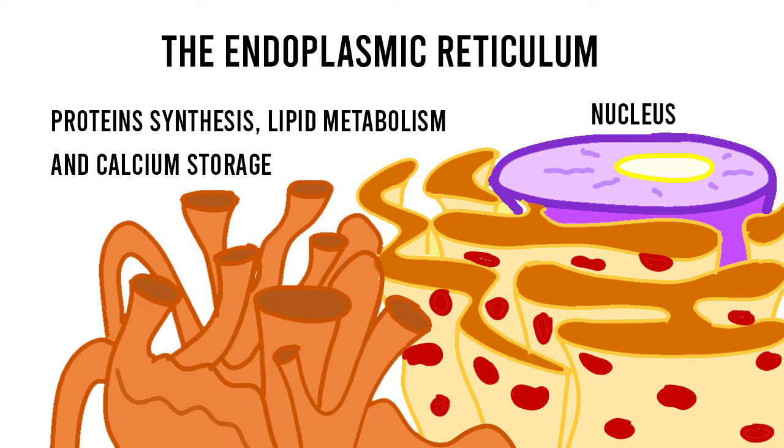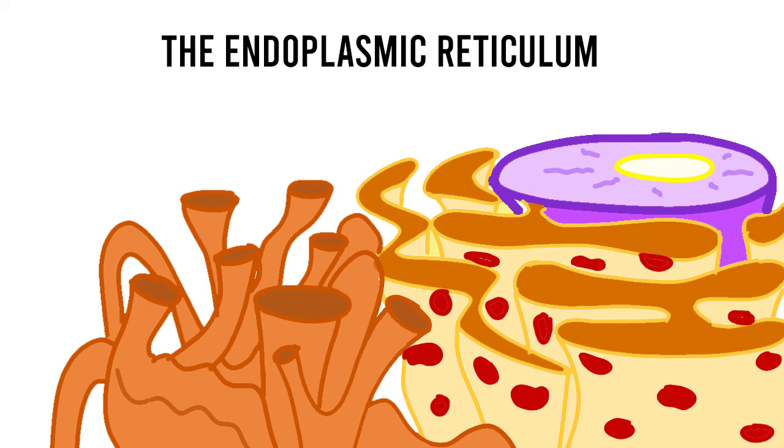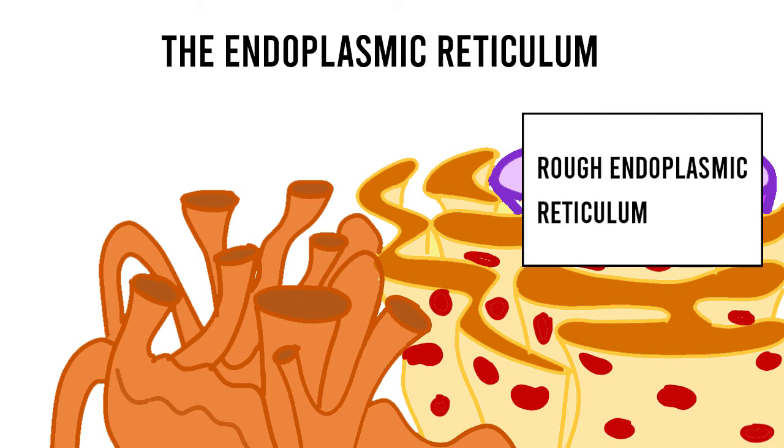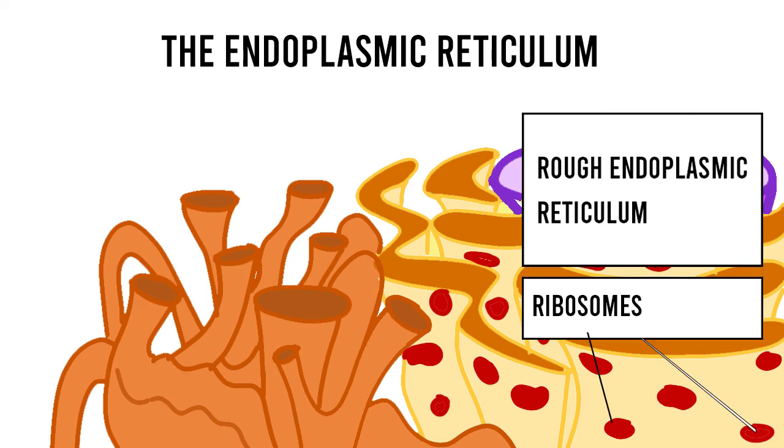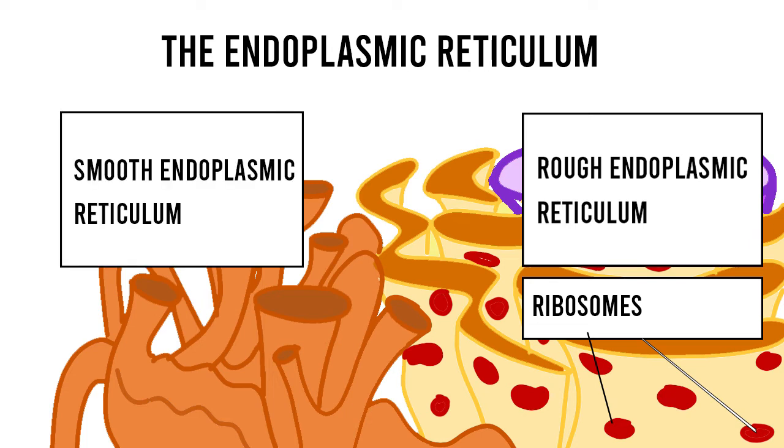The endoplasmic reticulum consists of two subunits: the rough endoplasmic reticulum which has ribosomes on its surface and aids in the synthesis and folding of secretory proteins, and the smooth endoplasmic reticulum which is responsible for synthesizing lipids, breaking down carbohydrates, and regulating calcium ion levels.